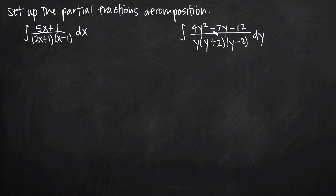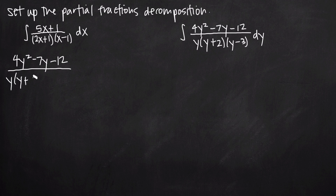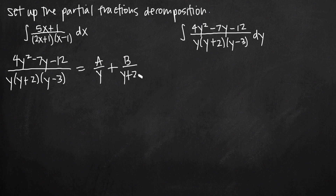Now let's look at our second example: the integral of 4y squared minus 7y minus 12 divided by y times quantity y plus 2 times quantity y minus 3. Notice that in our denominator we have three factors. Even though we have three factors, we have three distinct linear factors — each term contains a first degree y variable — so our decomposition is going to be A over y plus B over y plus 2 plus C over y minus 3.